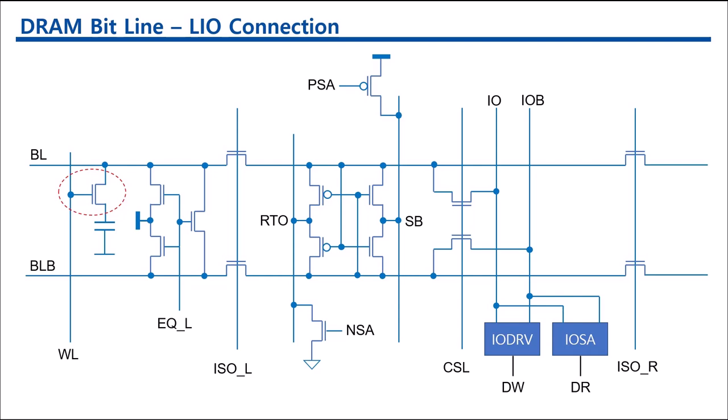I-O Driver and I-O Sense Amplifier are connected to the I-O and I-O bar. For the write case, the single-ended DW signal becomes a differential signal. The I-O and I-O bar become opposite levels when the I-O driver is turned on. For the read case, I-O Sense Amplifier input is differential and output is single-ended.